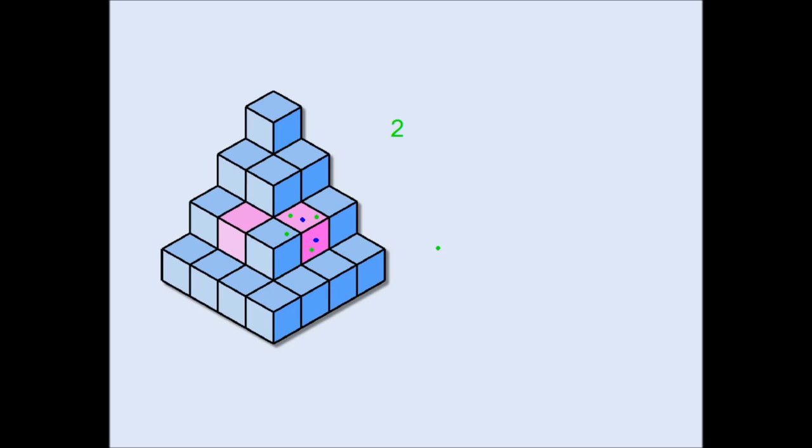When I remove this pink cube, I'll have a net gain of two squares. In other words, two of the new squares will be added to the surface area of the solid.